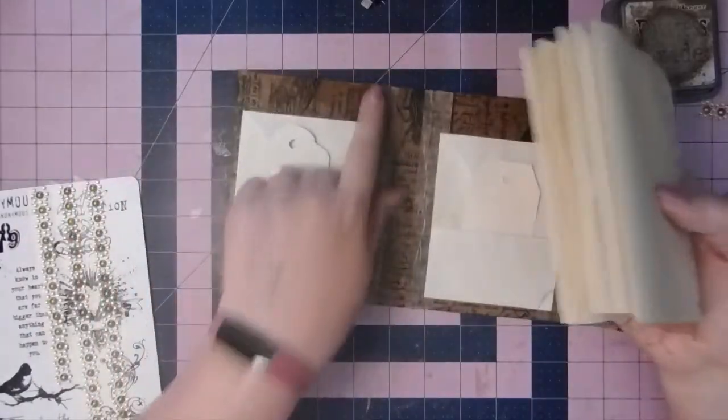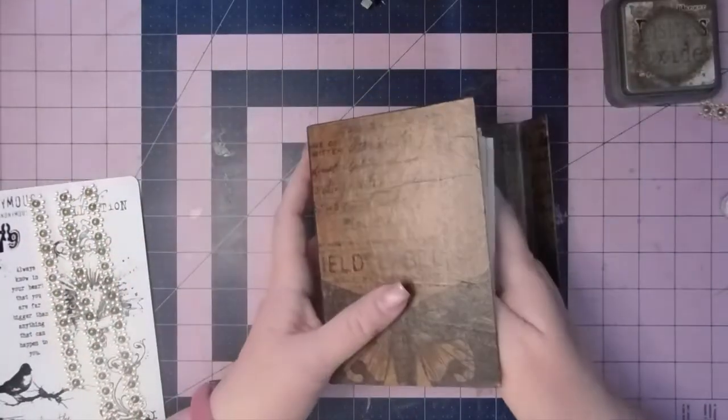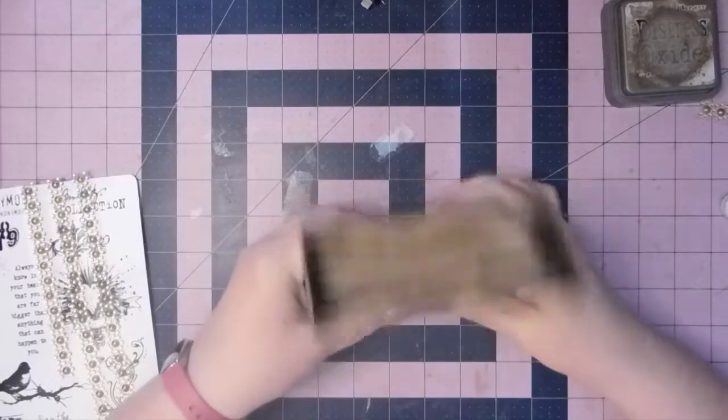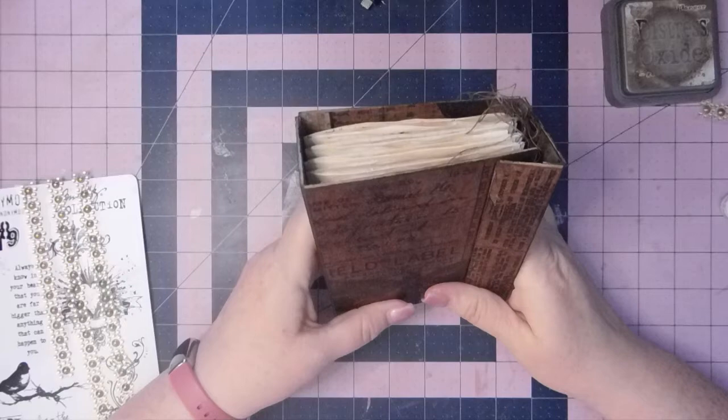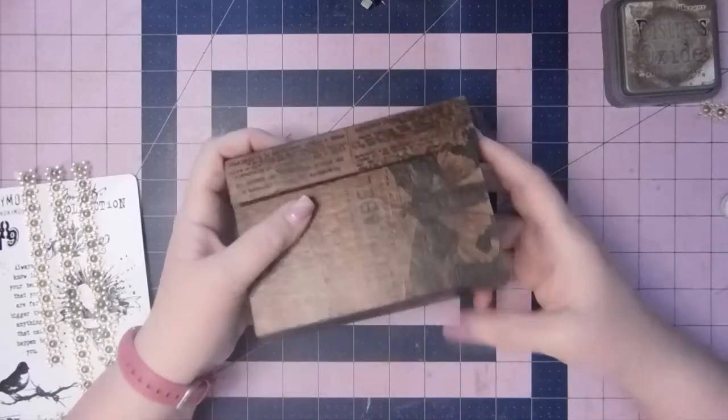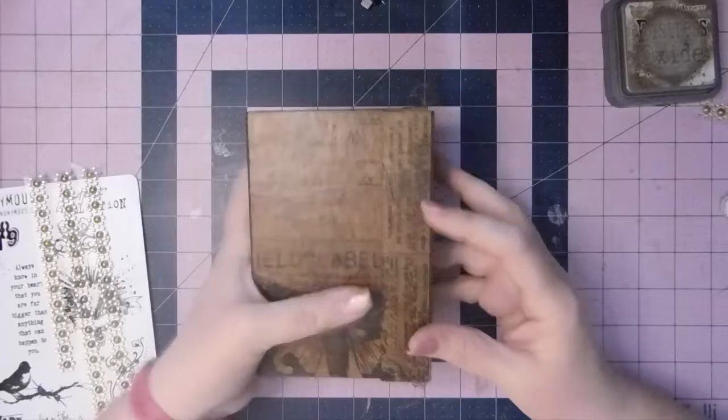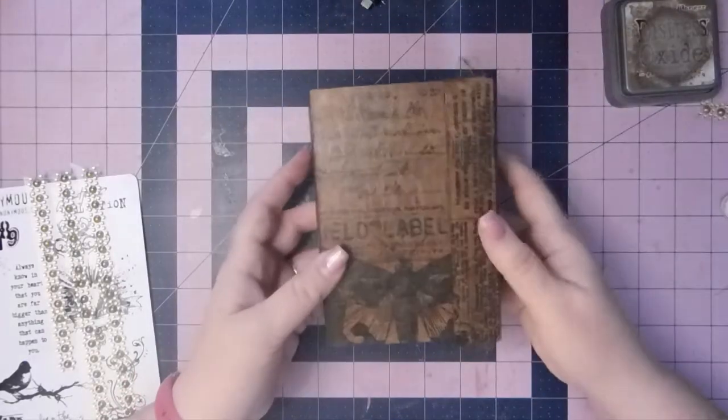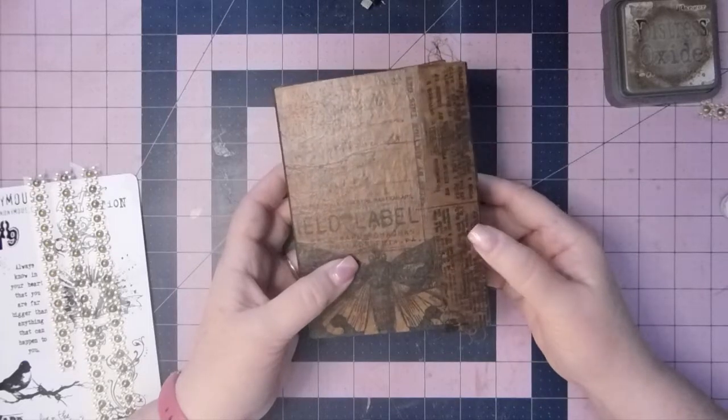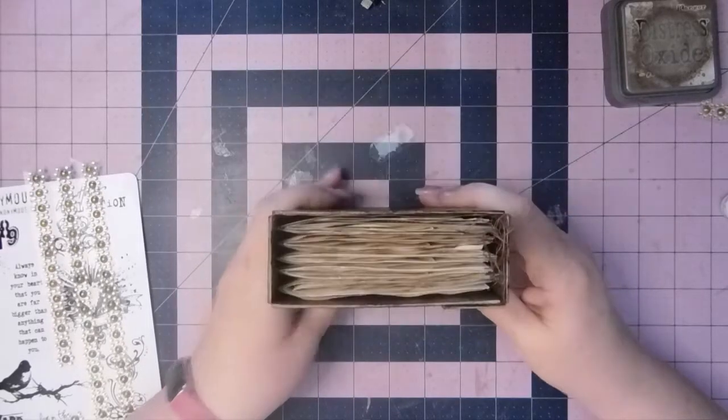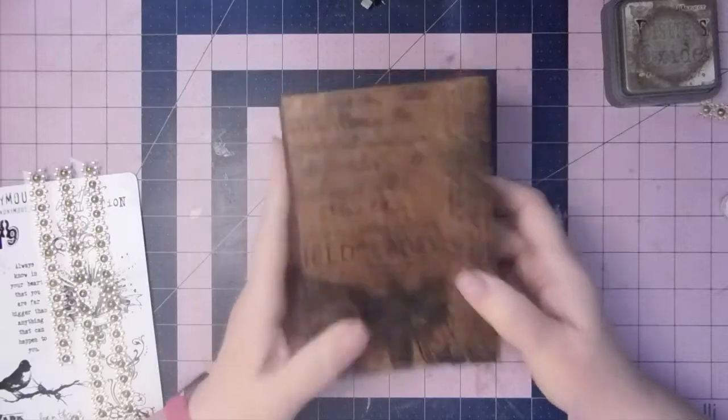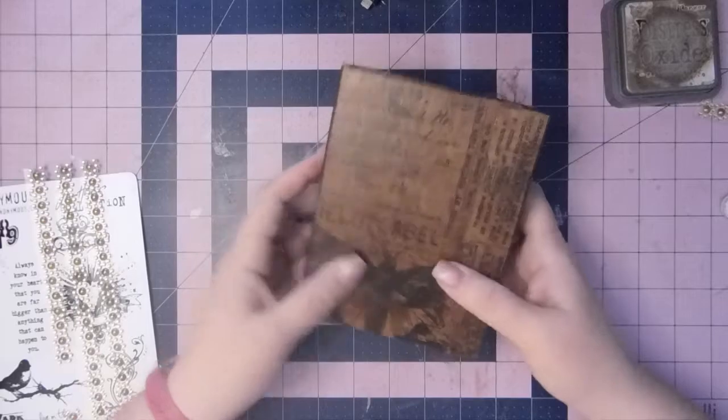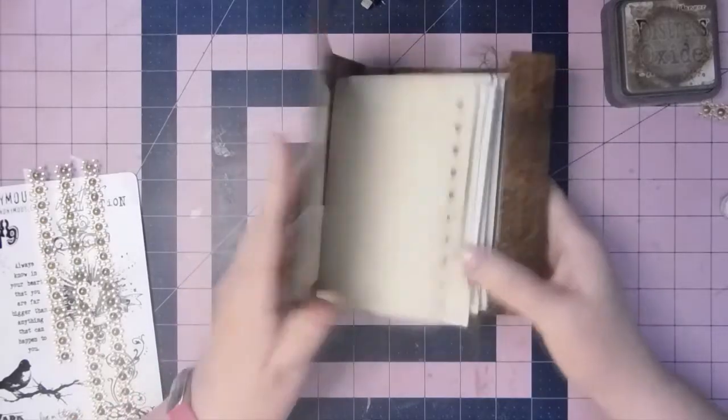I did add some Tim Holtz washi tape, but it does look a lot nicer with the five signatures. And then I need to, I think I'm just going to use a lace or probably seam binding closure. So I'm going to need to dye some seam binding. But I have all of these. If I do the five signatures, I'm going to have to put some more together.